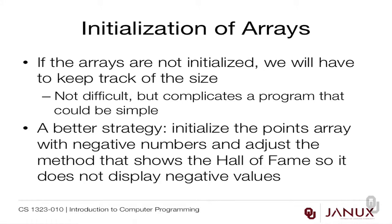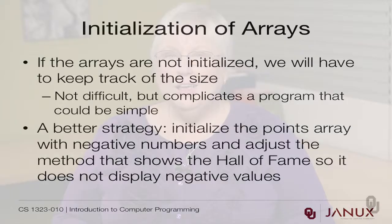If our arrays were not initialized we would have to keep track of the size, because when the first player plays there will only be one person in the hall of fame. There's a better strategy: we could initialize the points array with negative numbers and adjust the method that shows the hall of fame so that it doesn't display negative numbers. Notice that what we're doing is hiding some implementation details, so people using the class will never know our little secrets. That's how we are in computer science.